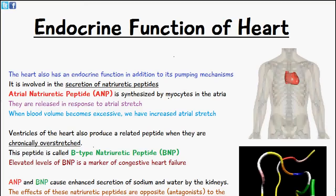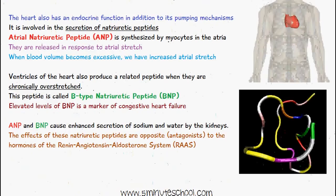ANP and BNP cause enhanced secretion of sodium and water by the kidneys, but the effects of these natriuretic peptides are opposite to the hormones of the renin-angiotensin-aldosterone system.